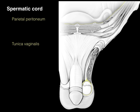The parietal peritoneum — that mesothelium and coelomic sac lining the inside of the abdominal cavity — is shown above. Then there's the tunica vaginalis, which is the outpouching of the parietal peritoneum around the testis. Notice they're not connected. The only time they are connected is in an indirect inguinal hernia. In normal individuals, there is no connection between the parietal peritoneum and the tunica vaginalis.